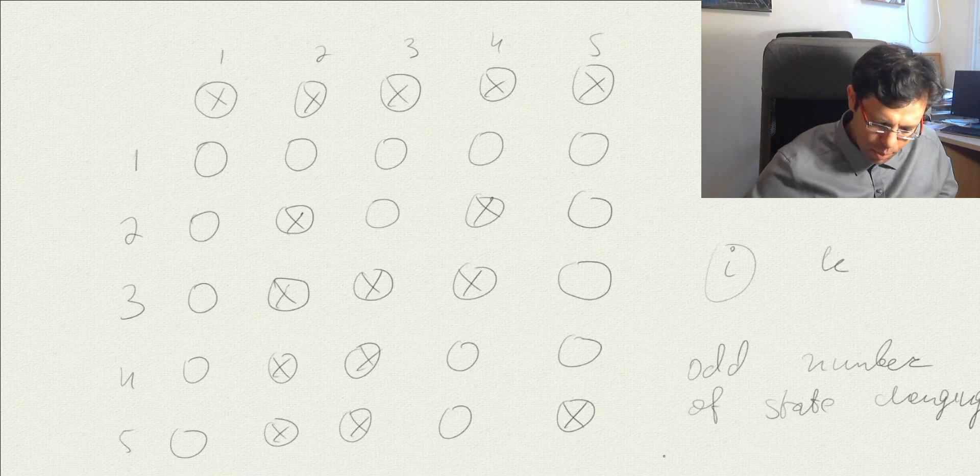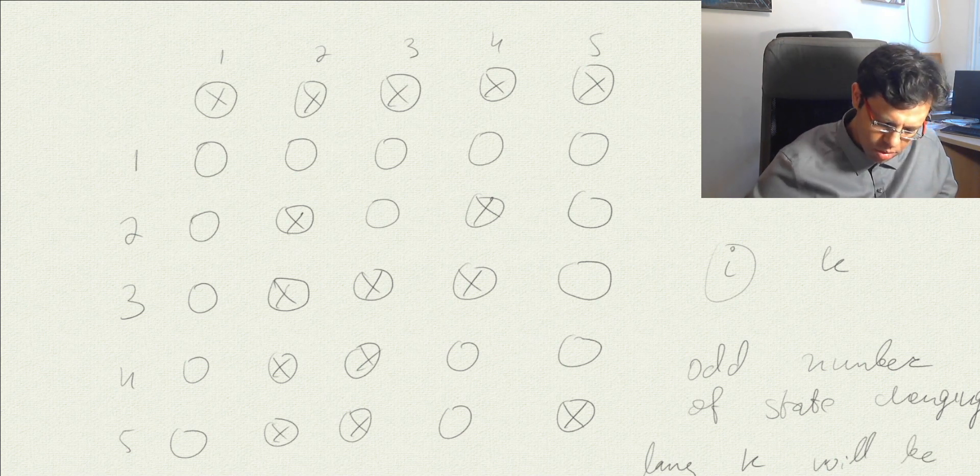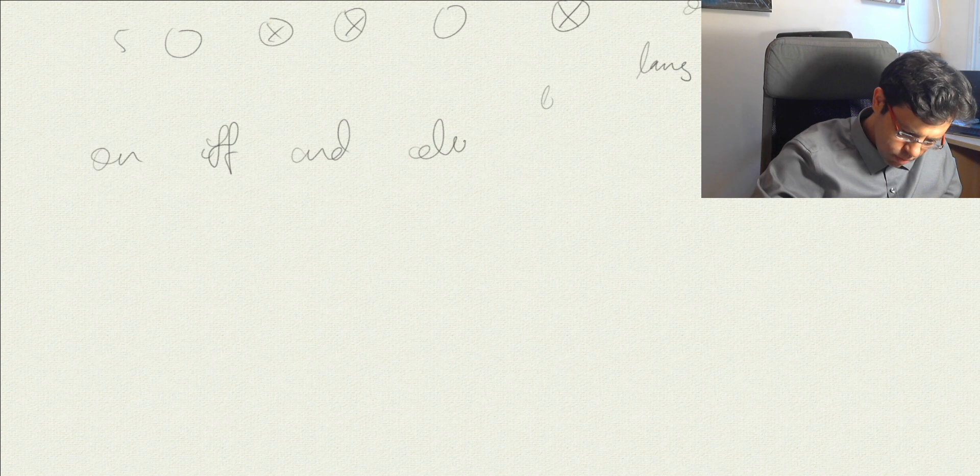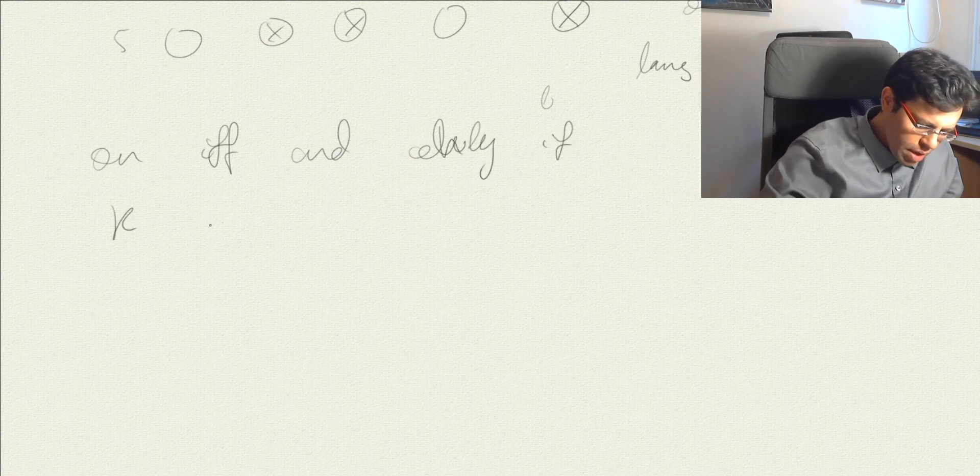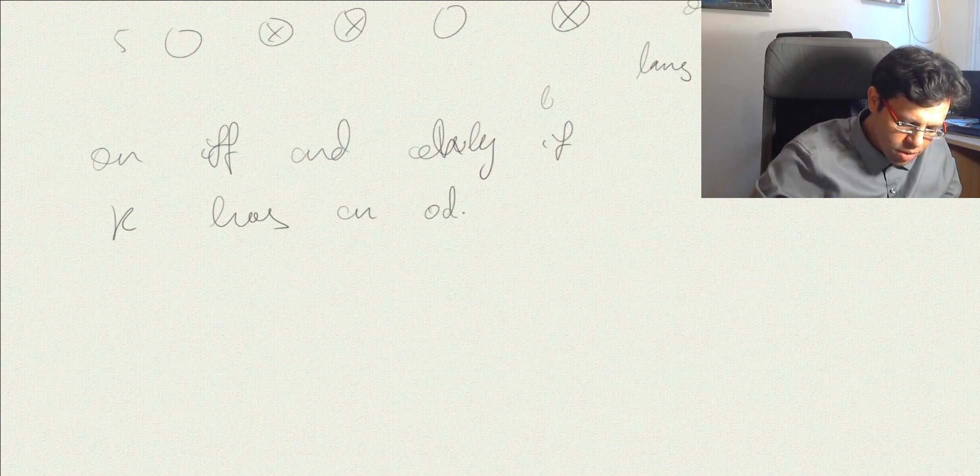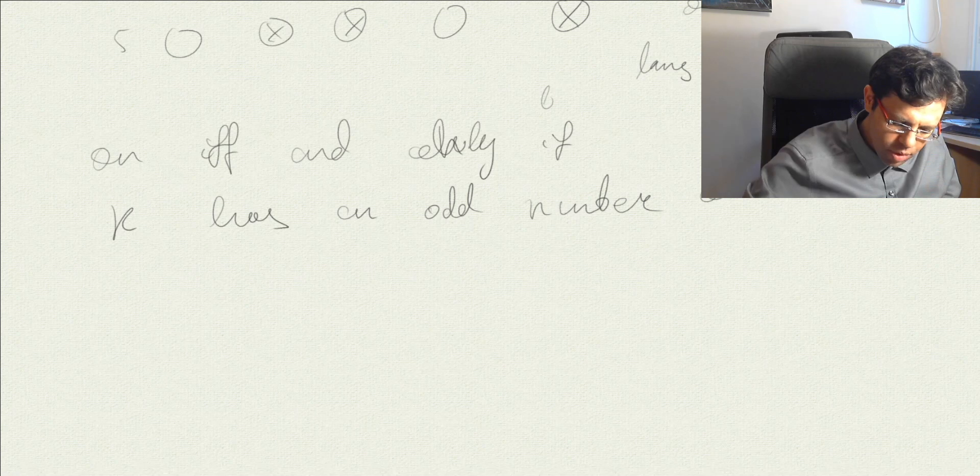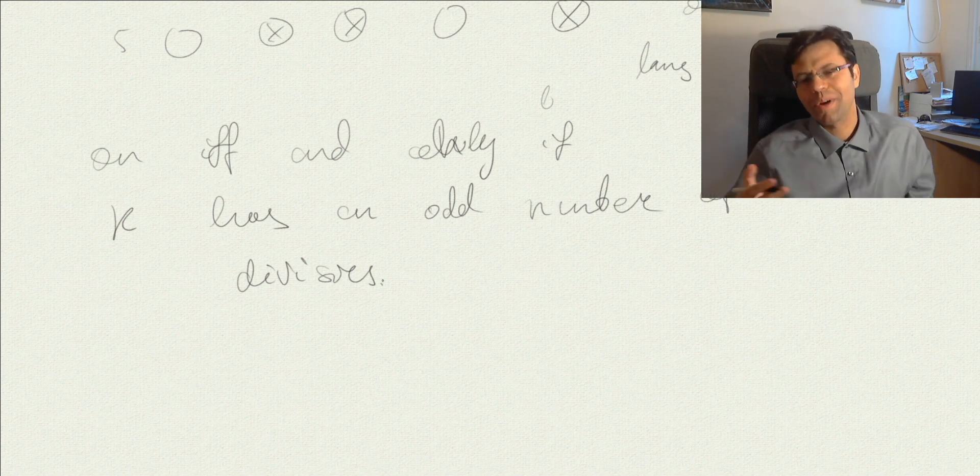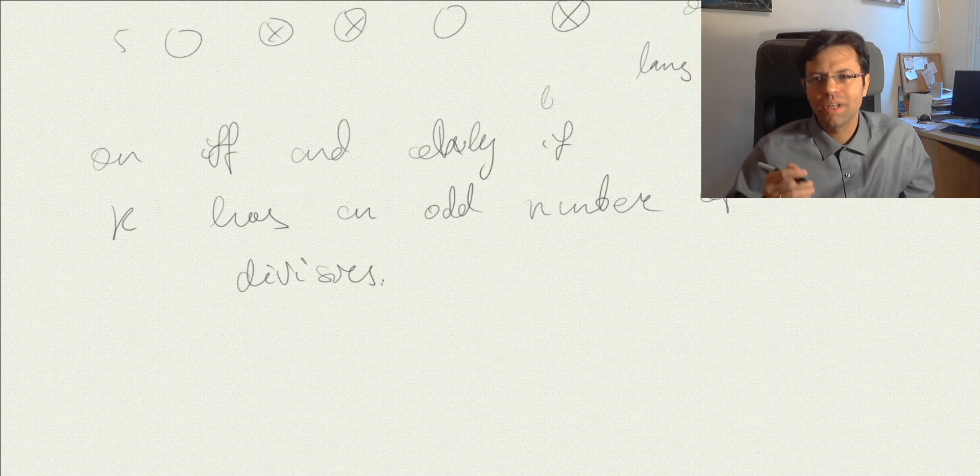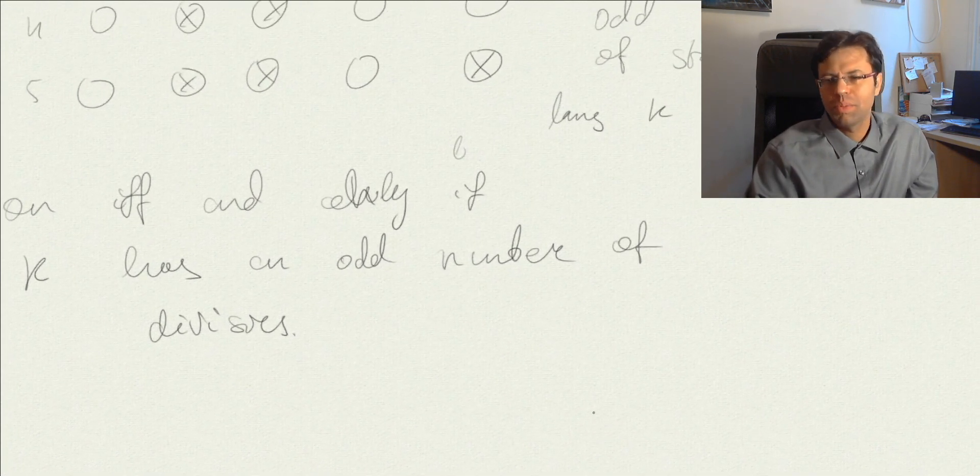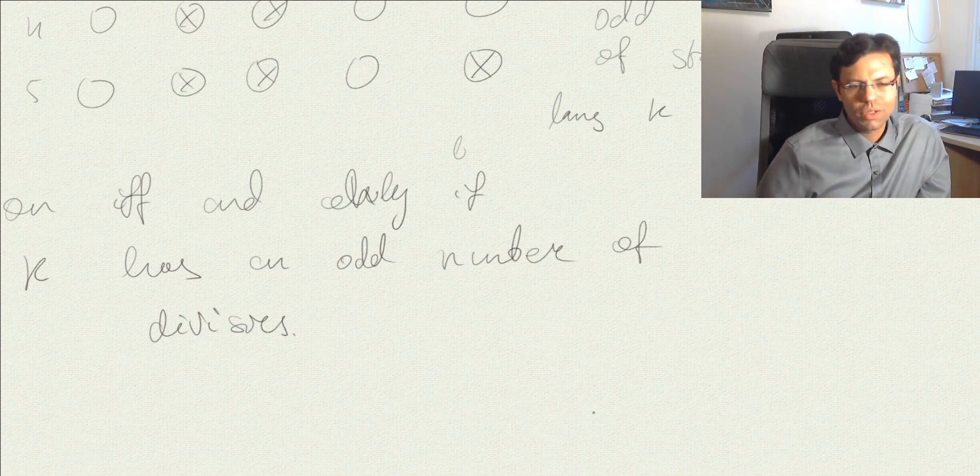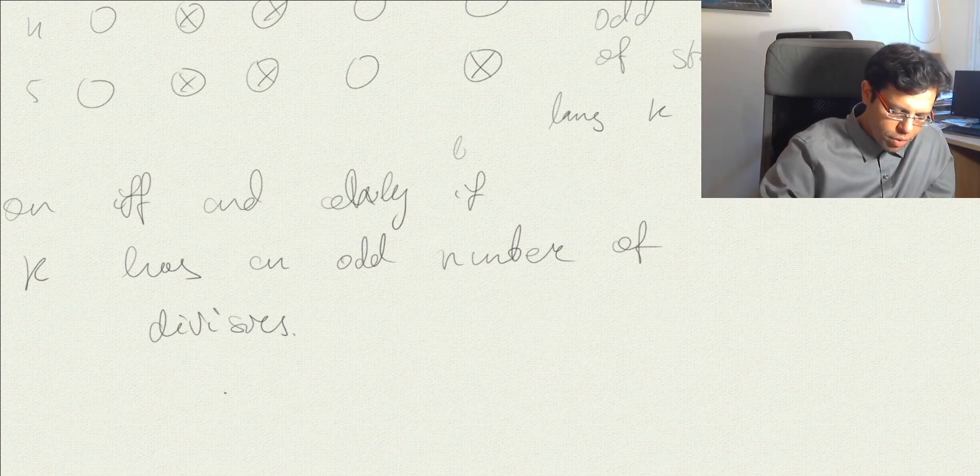This means that lamp k will be turned on if and only if k has an odd number of divisors. Now this characterization seems okay, but how do I characterize the numbers that have odd number of divisors? Maybe they're just the same, like half with odd divisors and half with even number of divisors. To characterize it more concretely, we'll use the fundamental theorem of arithmetics.